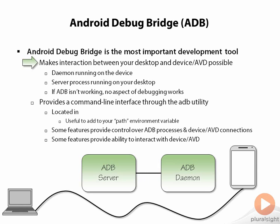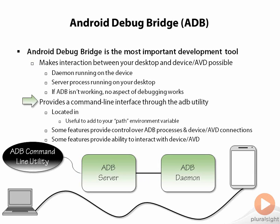We're not really able to do any significant development without ADB in place. ADB provides a command line interface that hooks into this system. To get to the command line interface, you need to go out to wherever you installed your Android development environment. There will be a subfolder called SDK, and inside there is a folder called Platform Tools — that's where you'll find the utility ADB. You either need to reference that path fully when you type your commands, or put it into your path environment variable.